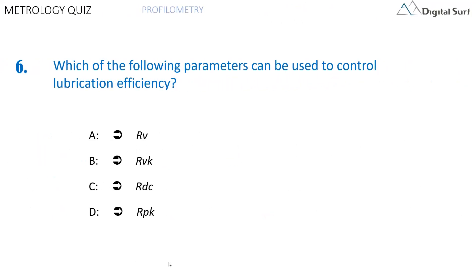Question number six. Which of the following parameters can be used to control lubrication efficiency? Answer A: RV. Answer B: RSK. Answer C: RDC. Answer D: RPK. Multiple answers are allowed.